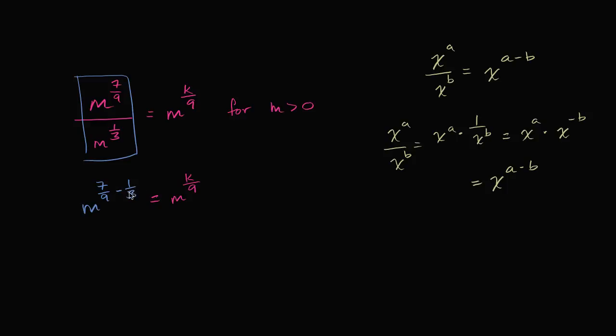Well, 1/3rd is the same thing, if we want a common denominator, 1/3rd is the same thing as 3/9th. So I can rewrite this as 3/9th. So 7/9th minus 3/9th is going to be 4/9th.